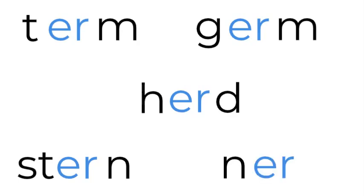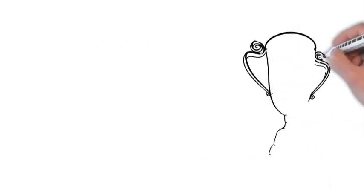I'm going to show you the e and r words. There's term. There's germ. There's herd. Stern and nerve. So there's a lot of er words — the er sound.